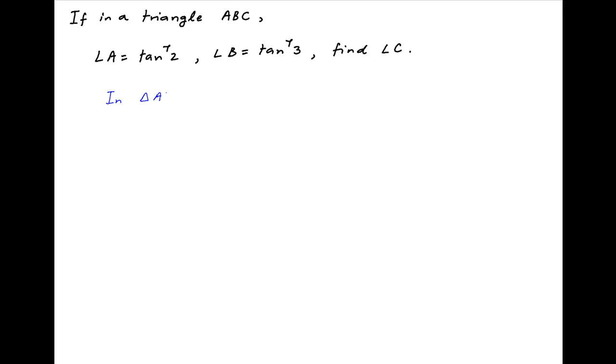In any triangle ABC, the sum of the angles A, B and C is equal to 180 degrees or pi.